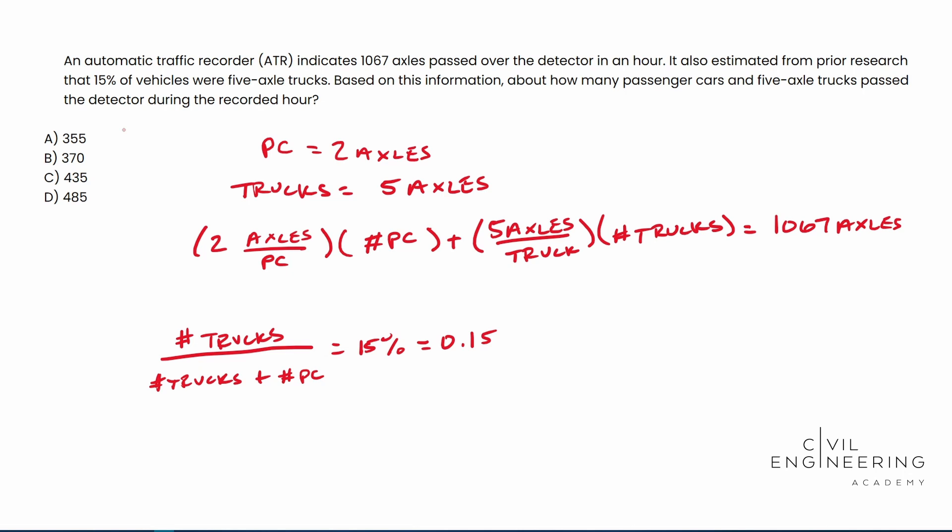Okay, so if we can derive this equation to our knowns and unknowns, we can basically plug and chug and solve for this, and so here's what we're going to do. We're going to bring this number of trucks plus number of passenger cars over. We're going to multiply it out, so that way we have the number of trucks by itself.